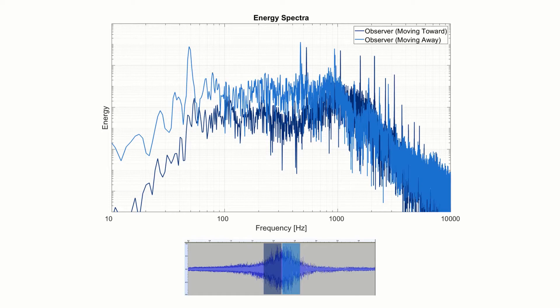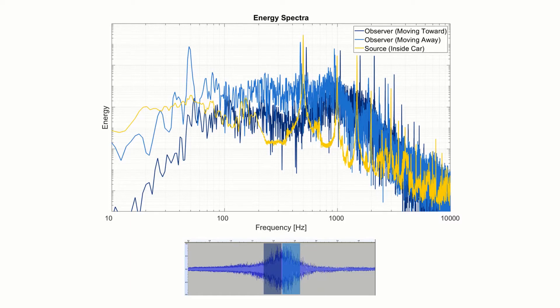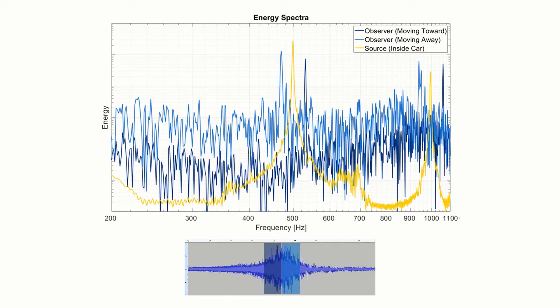Note that the two peaks in the middle of the graph are at different frequencies — one higher and another lower. This difference is the Doppler effect. If we also plot the spectrum from the source, we see that it lies in between the two peaks of the recorded sound. By zooming into these peaks, we know the source frequency is the 500 hertz we had already determined.